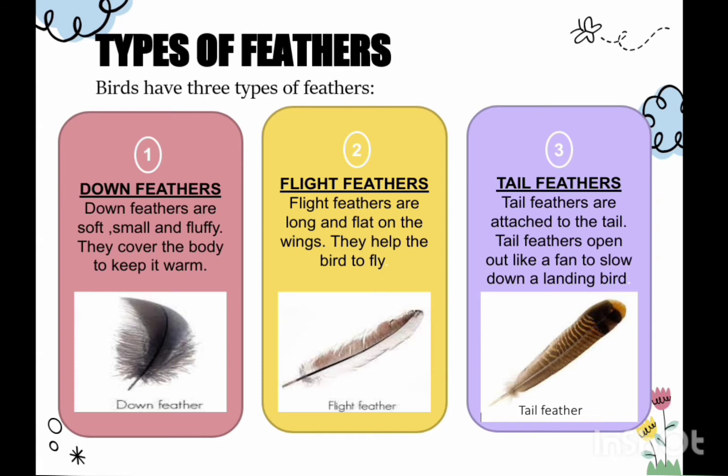The second type is flight feathers. Flight feathers are long and flat on the wings. They help the bird to fly. Third, we have tail feathers. Tail feathers are attached to the tail and open out like a fan to slow down a landing bird.